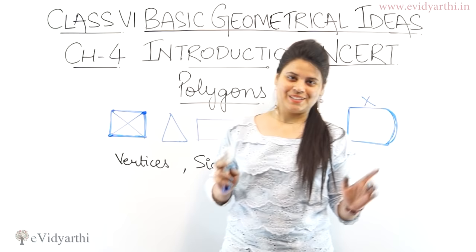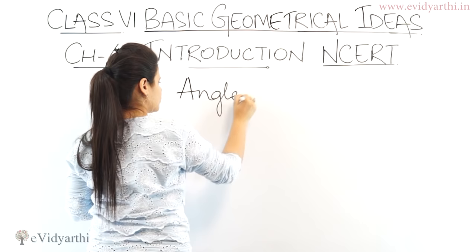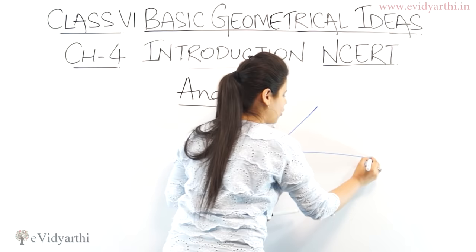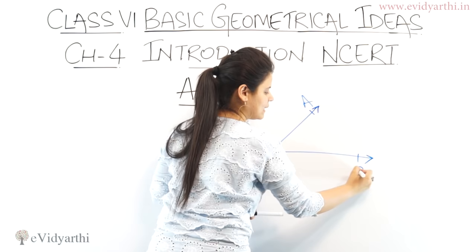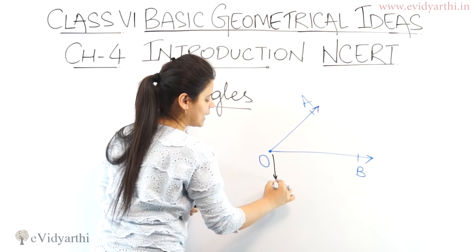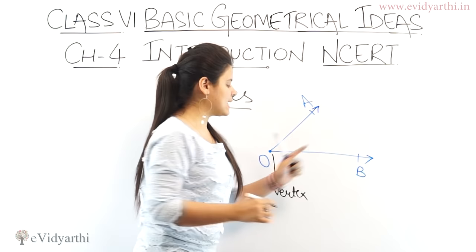The next topic is angles. What are angles? Angles are formed by two rays that start from a common point. If I draw this, this is the common point and these are the two rays. For example, OA is a ray and OB is a ray — O is their common point. So this becomes an angle. The common point is called the vertex, and the rays are called the arms, or we can also call them sides.